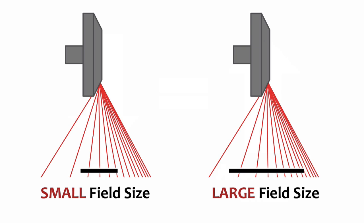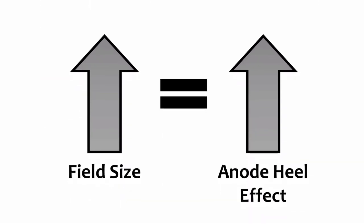The x-ray field size is one more factor that affects the severity of the anode heel effect. Increasing the field size increases the anode heel effect. Using a large field exposes the receptor to more of the low intensity beam on the anode side and more of the high intensity beam on the cathode side, resulting in an increased difference in intensity across the x-ray field. The relationship between field size and the heel effect is direct: as the field size increases, the anode heel effect also increases.